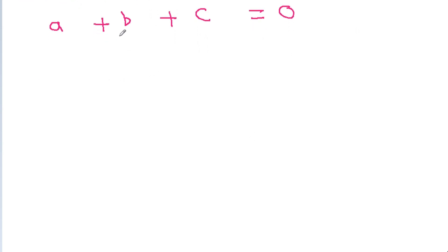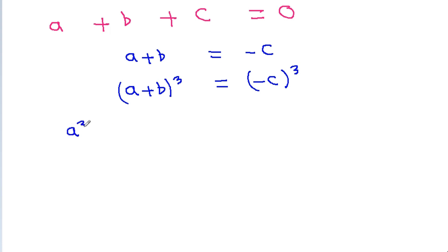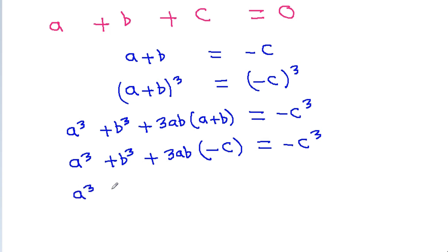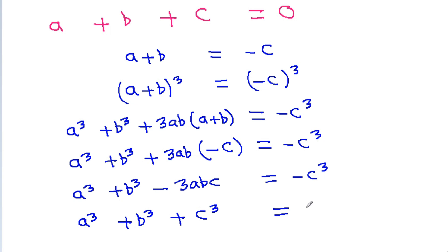If a plus b plus c is equal to 0, then a plus b will be equal to minus c. So a cube plus b cube plus 3ab times a plus b equals minus c cubed. Therefore a cube plus b cube plus 3ab times minus c equals minus c cube. This gives a cube plus b cube minus 3abc equal to minus c cube, and so a cube plus b cube plus c cube is equal to 3abc.